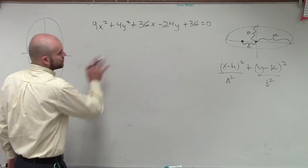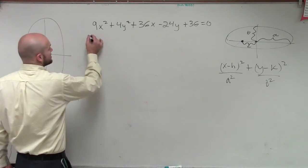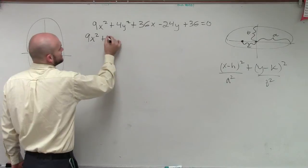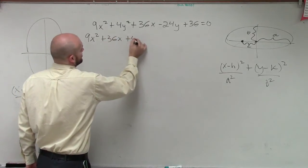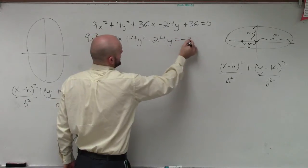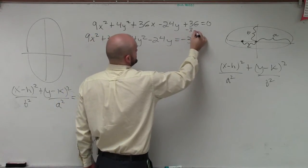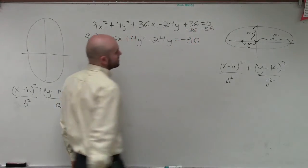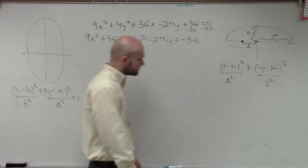Before we can figure out all that information, we need to rewrite this in this form. To do that, I'm going to first group my x's and my y's. So I'll have 9x² + 36x + 4y² - 24y = -36, as I'm just going to get the constant to the other side.